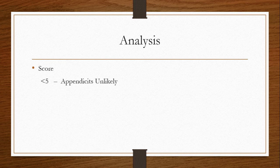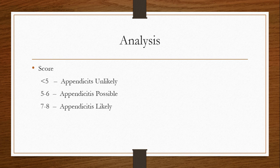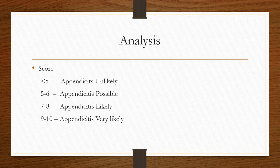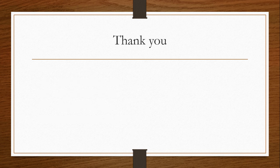If the score is 5 or 6, there is a possible chance of appendicitis. If the score is 7 to 8, appendicitis is likely. If the score is 9 to 10, appendicitis is very likely. Thank you.